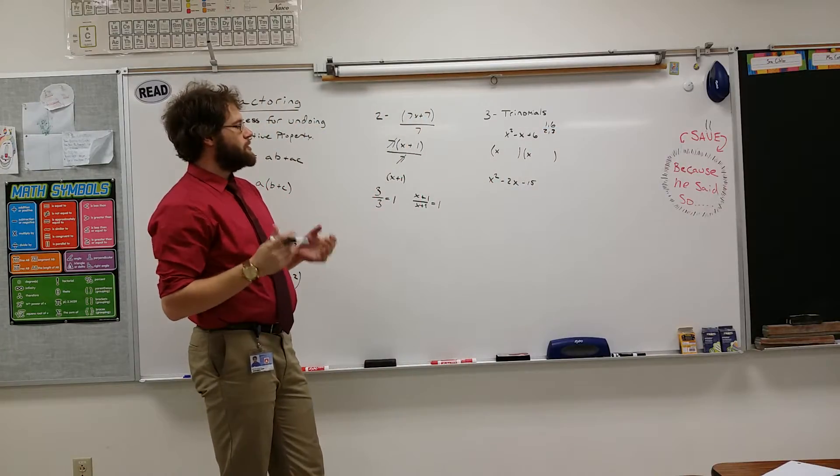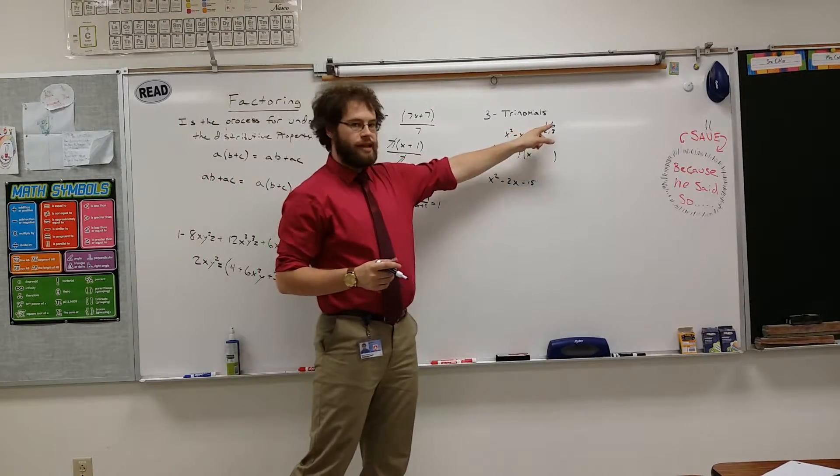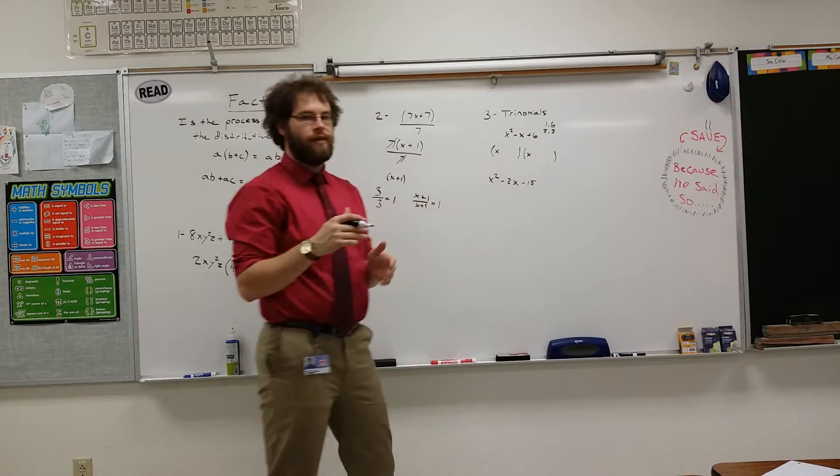And so, we're going to try to use these factors to see if we can get them to come up to negative 1. There's no way for 1 and 6 to get to negative 1, right? 1 minus 6 is 7, 6 minus 1 is 5, it's not going to work.